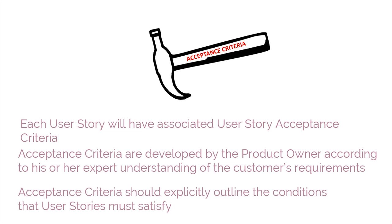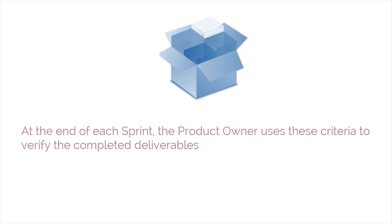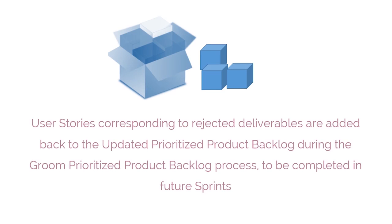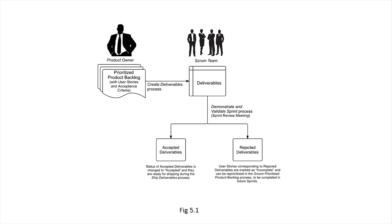Acceptance criteria provide the objectivity required for the user story to be considered as done or not done during the sprint review meeting. These also provide clarity to the team on what is expected of a user story by removing ambiguity from requirements and aligning expectations. At the end of every sprint, the product owner will use the acceptance criteria to verify the completed deliverables. If the deliverables meet the specified criteria, then the associated user stories are considered done. User stories of rejected deliverables are added back to the updated prioritized product backlog during the grooming prioritized product backlog process to be completed in future sprints. This is summarized by Figure 5-1 presented here.